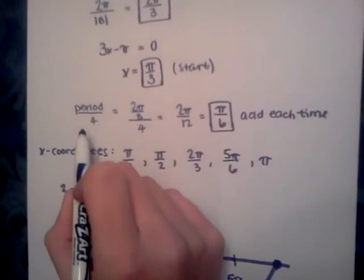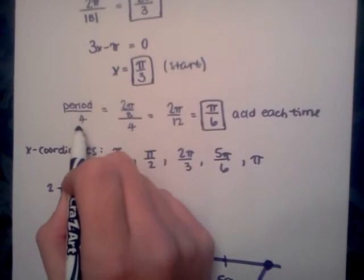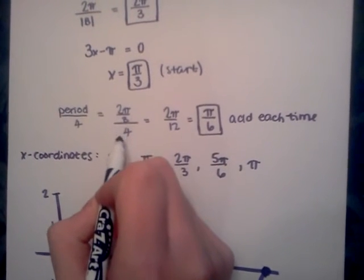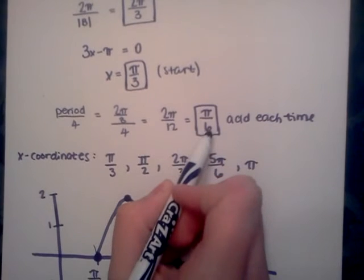To see what you add each time, you do period over 4. So 2 pi over 3 over 4 equals 2 pi over 12, which is pi over 6.